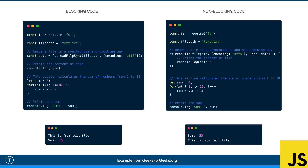With readFileSync, when we hit that line it's going to stop the rest of the execution of this code until this operation completes. Then it will go ahead and log the data from the file, and then it will do the sum calculation. The output is in that order because it stops, reads the file, then logs the data, then does the sum.